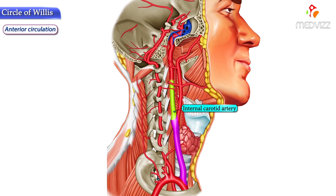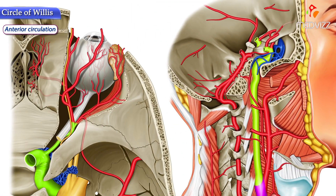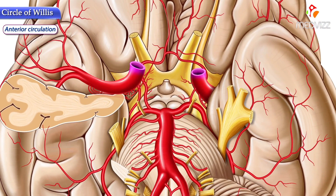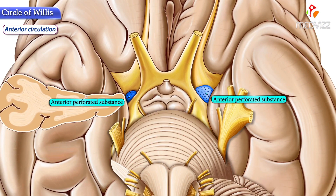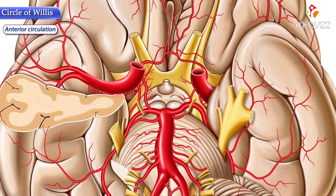The internal carotid artery runs upwards within the carotid sheath to enter the skull through the carotid canal, formed by the temporal bone. Once the internal carotid artery enters the cranial cavity, it runs anteriorly through the cavernous sinus, where it gives off a branch known as the ophthalmic artery. The artery then turns and courses vertically upwards to the anterior perforated substance, where it divides into the middle cerebral artery and the anterior cerebral artery.